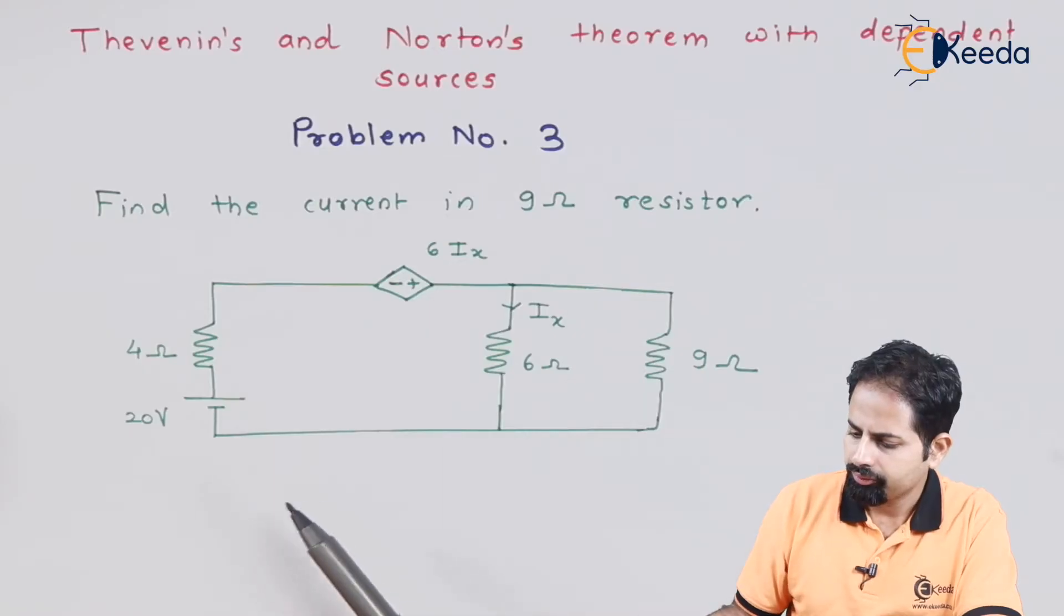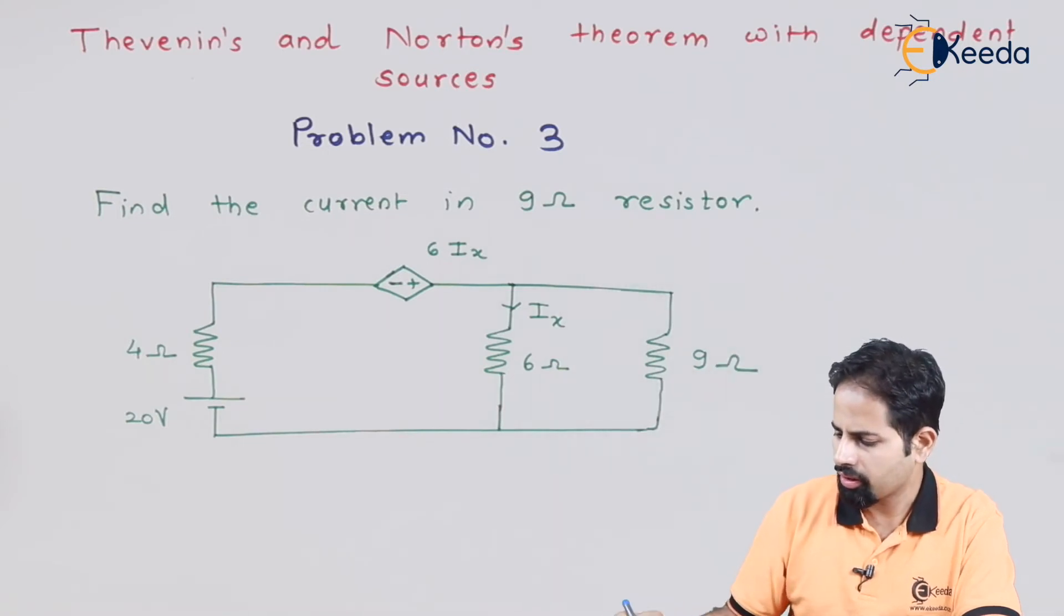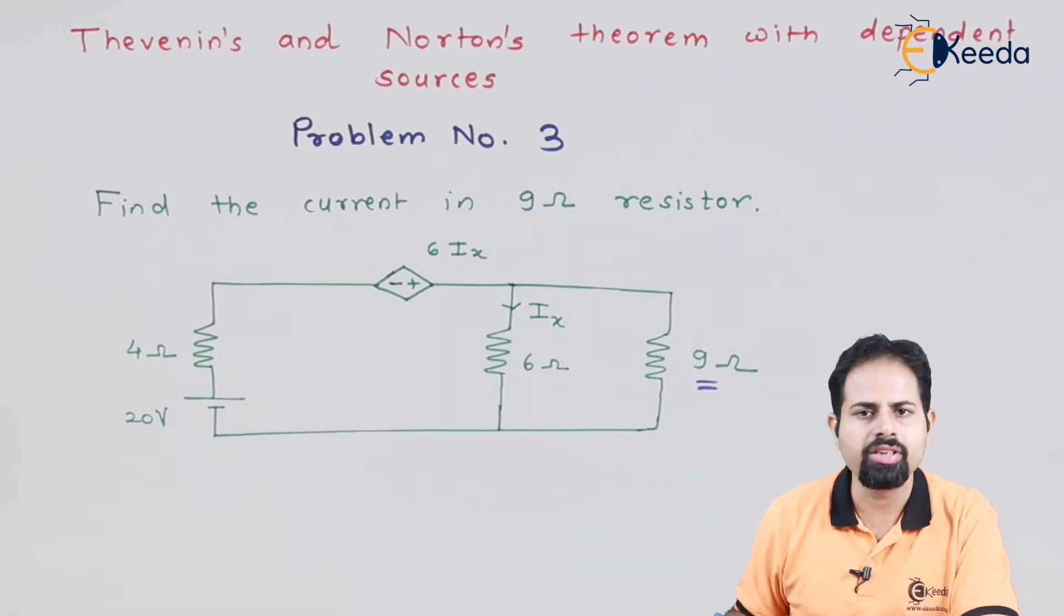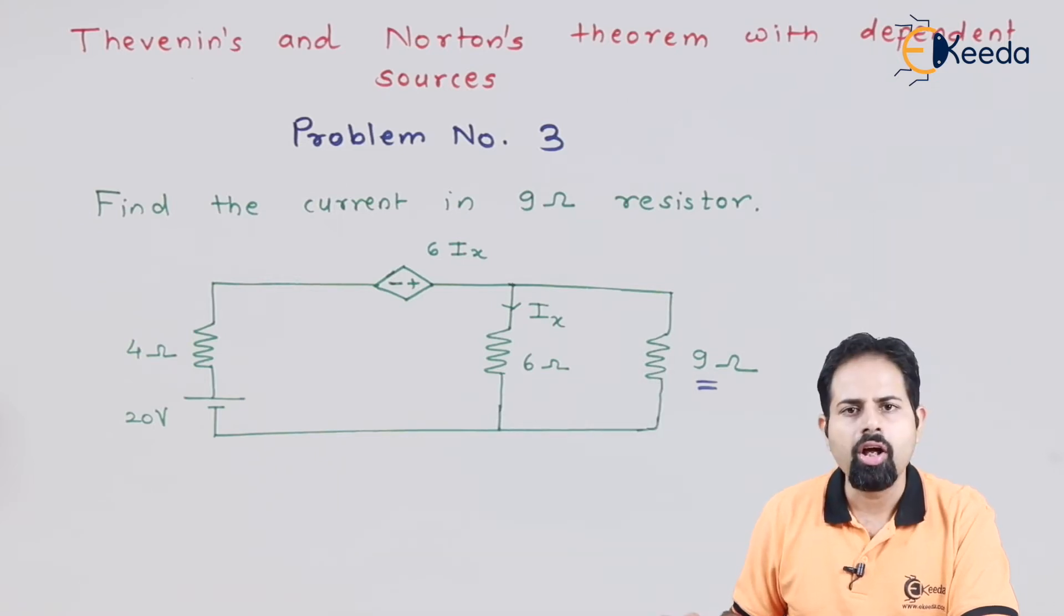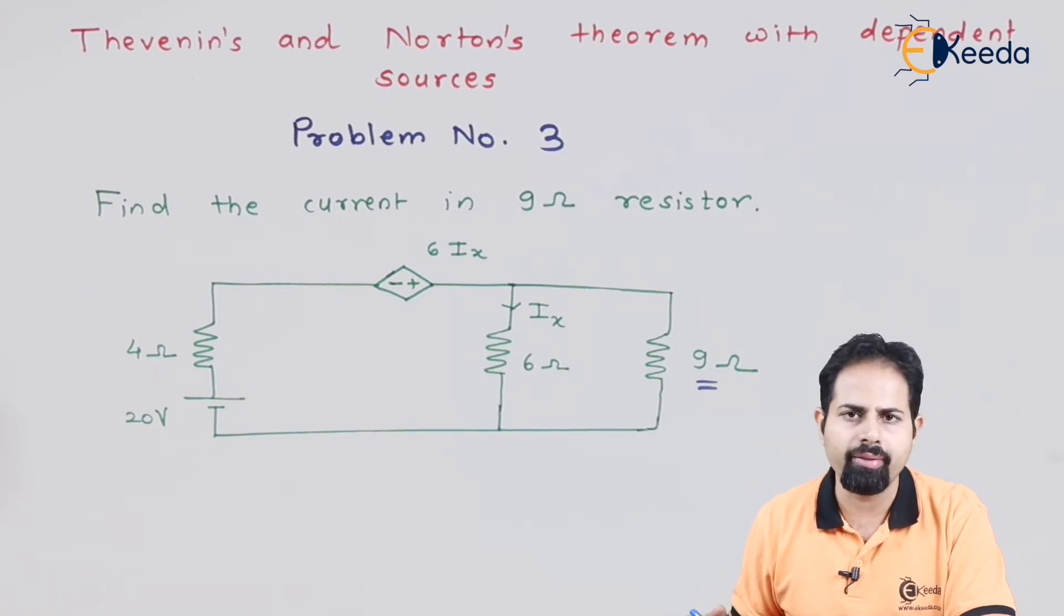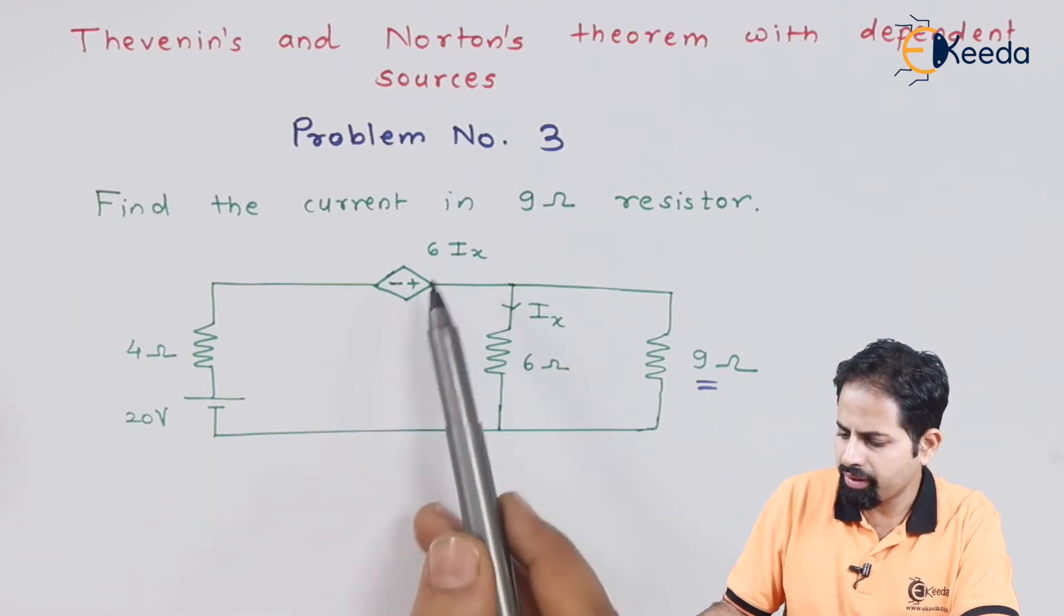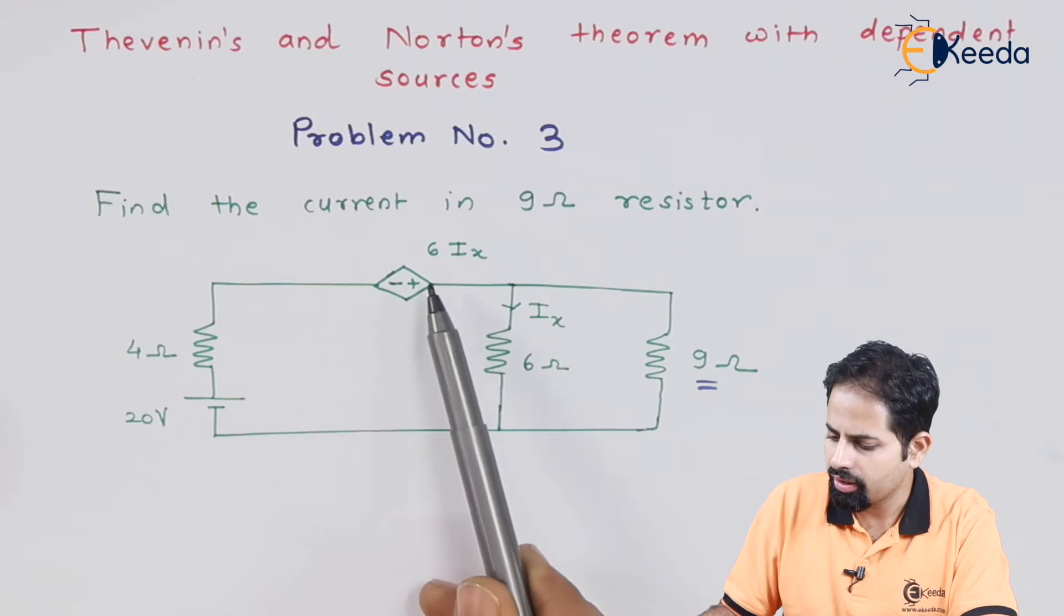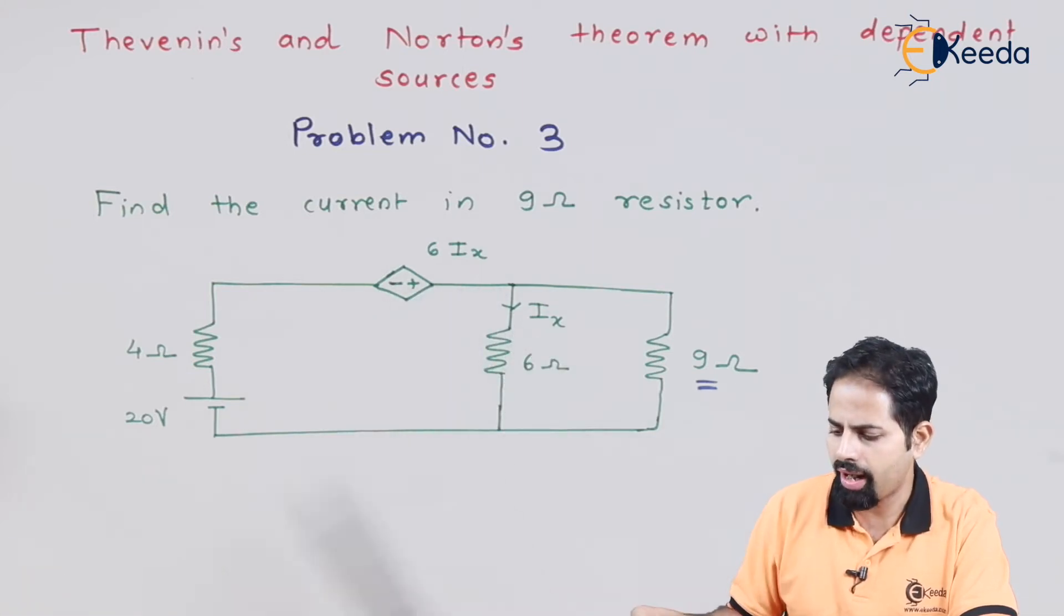You can see here, we are supposed to find current in 9 ohm resistor. So to find current in this resistance, we can use Thevenin's and Norton's theorem. There is a dependent source which you can see. It's a voltage source 6 into Ix, so it depends on this current Ix.